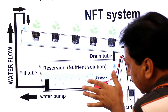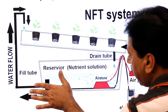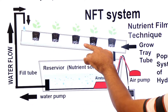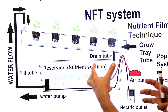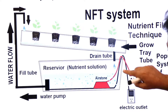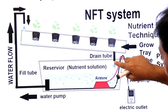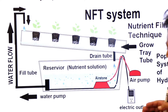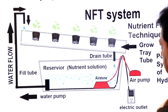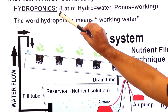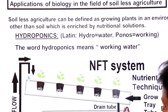As the nutrients flow past the plant roots, the roots absorb the nutrients. The water is then recycled through the drain tube back to the reservoir. This cycle is repeated again and again. Now let us come back to the definition.